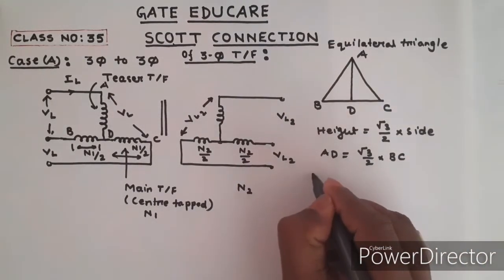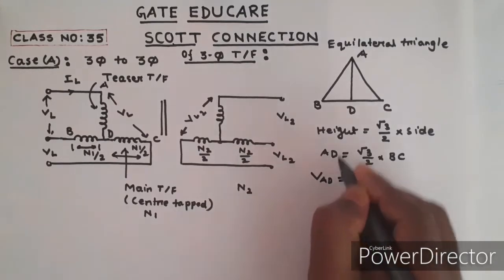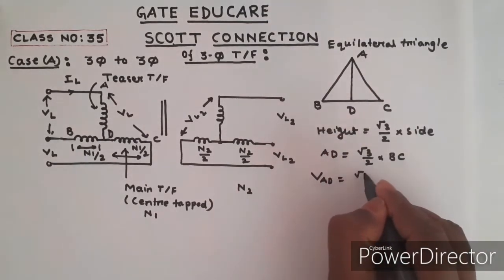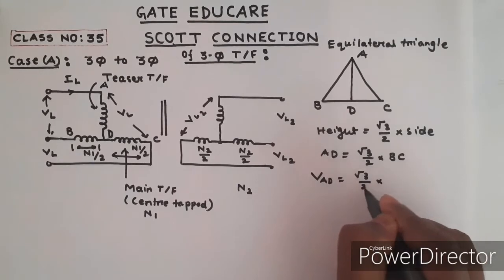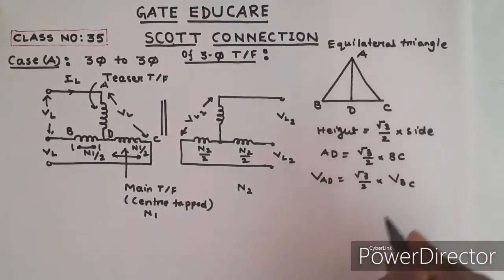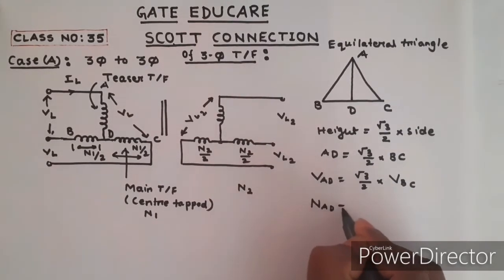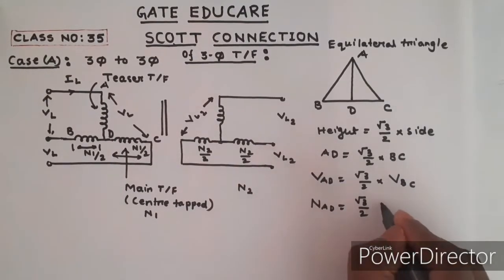Therefore, the voltage V_AD equals root 3 by 2 times V_BC. Since voltage ratio and turns ratio are the same, N_AD equals root 3 by 2 times N_BC.